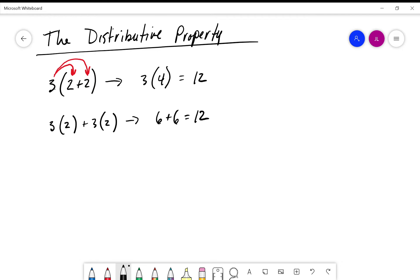The reason this is important is later on we're going to have instances where we may have 3 times x plus 4, and we can't add x plus 4. The distributive property allows us to take 3 and multiply it by x and take 3 and multiply it by 4.